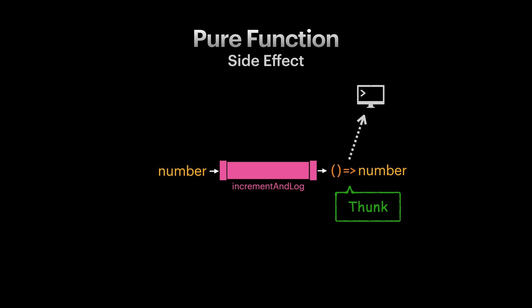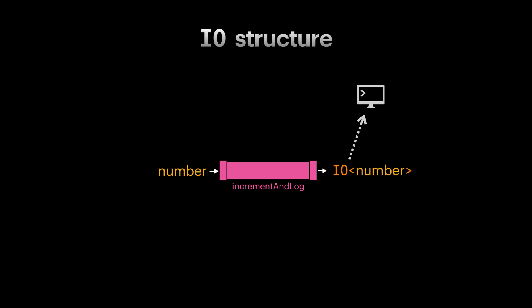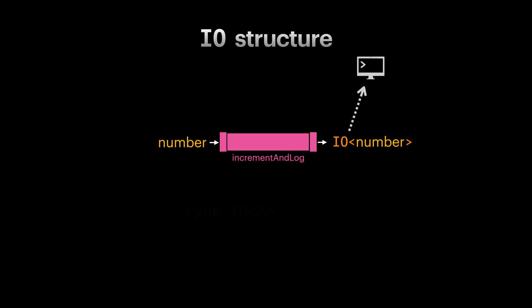So how about reserve these thunks for modeling side effects? What we did is we came up with a new structure specifically to handle side effects. Let's name our new structure IO. Now our incrementAndLog function receives a number and returns an IO of a number. IO of A is a structure that when it is invoked, it delivers us some value of type A. What IO gives us is the opportunity to postpone and delay side effects to a later time, allowing us to benefit from the advantages of function purity.